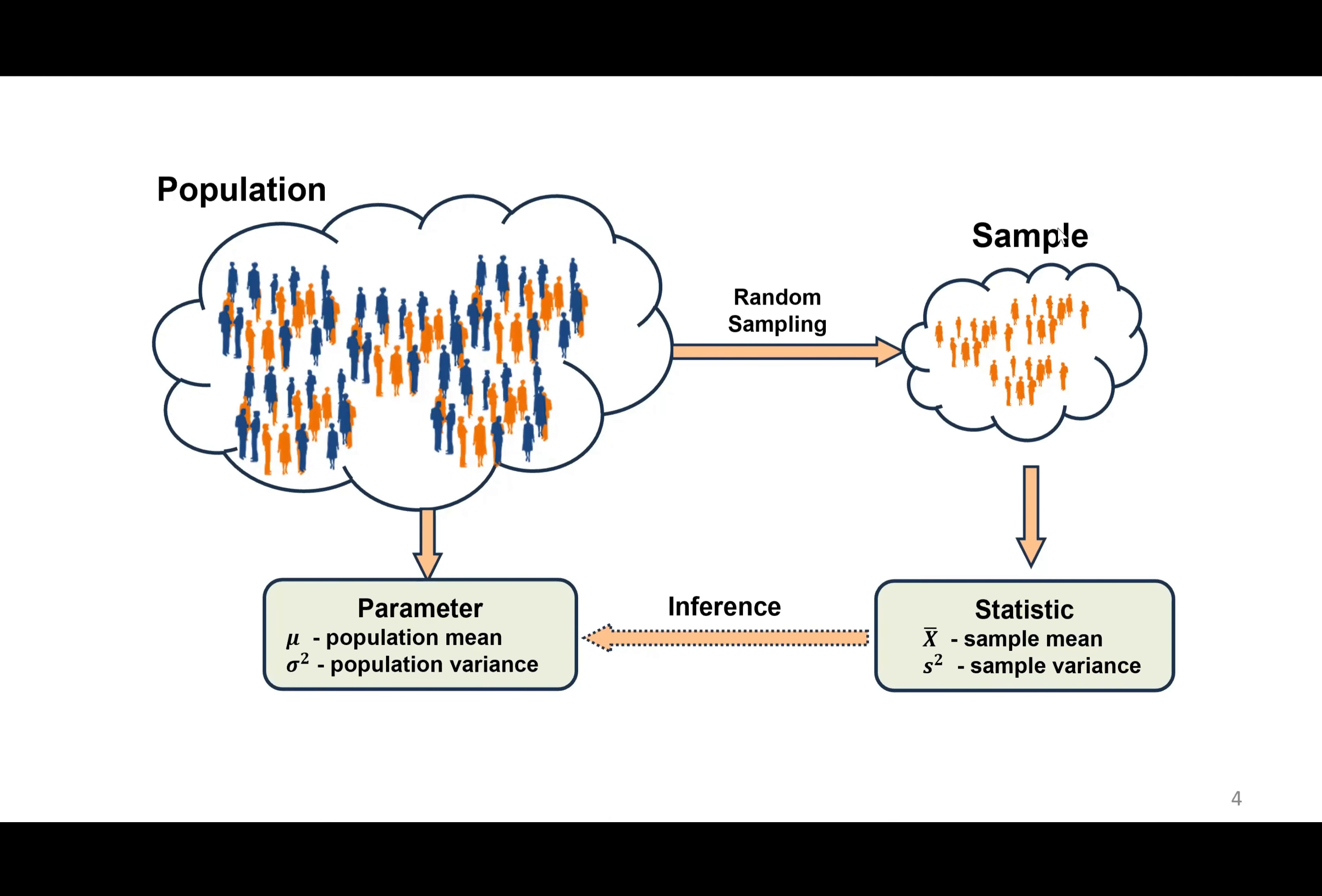The statistics that we calculate from the sample help us make inferences about population parameters, for example, the population mean mu and population variance sigma squared. We use x bar to denote sample mean, s squared to denote sample variance, but the population mean is mu and population variance is sigma squared.